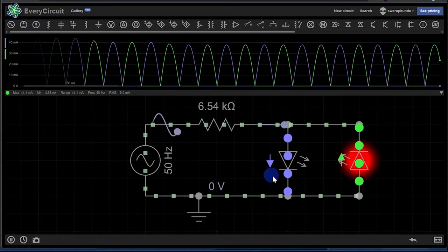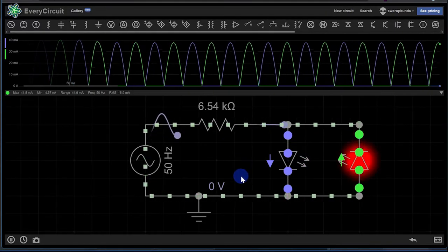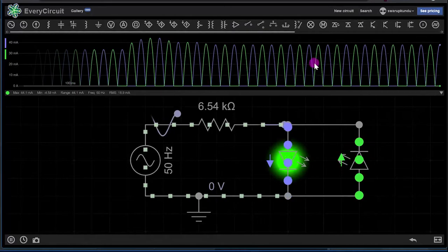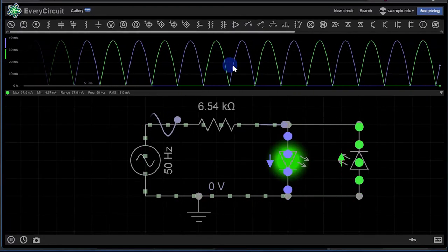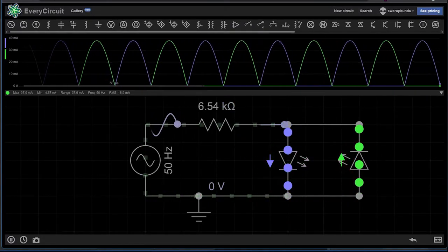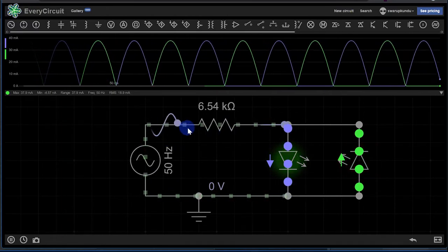Now, will this LED glow constantly when you connect direct to 220 volt AC source with a resistor? No. As we see in this animation or simulation, they will be flickering.